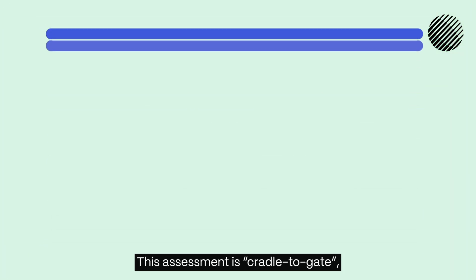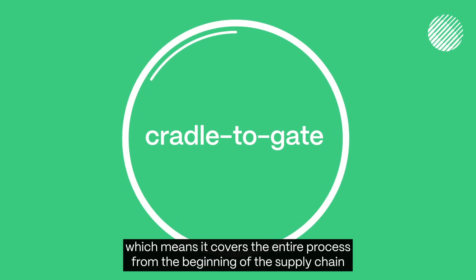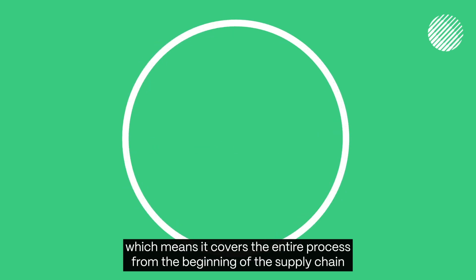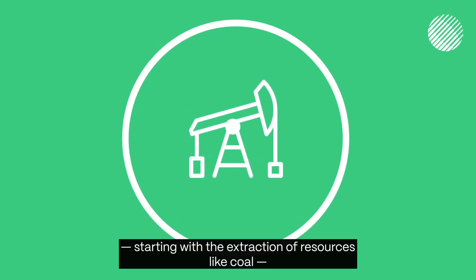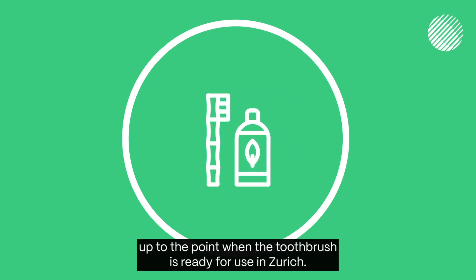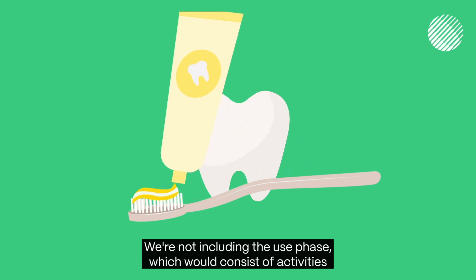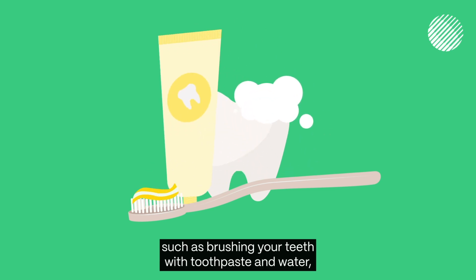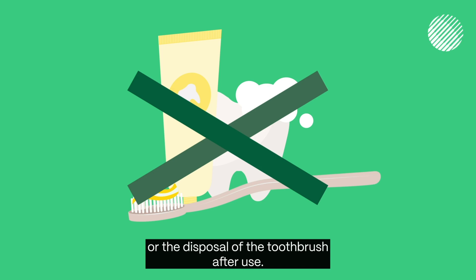This assessment is cradle to gate, which means it covers the entire process from the beginning of the supply chain, starting with the extraction of resources like coal, up to the point when the toothbrush is ready for use in Zurich. We're not including the use phase, which would consist of activities such as brushing your teeth with toothpaste and water, or the disposal of the toothbrush after use.